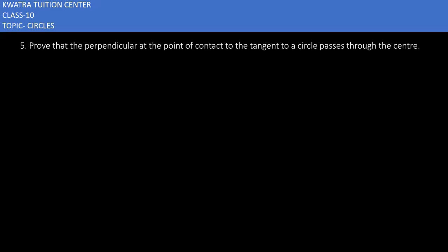Let's start with the fifth question of exercise 10.2. It says prove that the perpendicular at the point of contact to the tangent to a circle passes through the center. So we have to ensure that our point passes from the center.